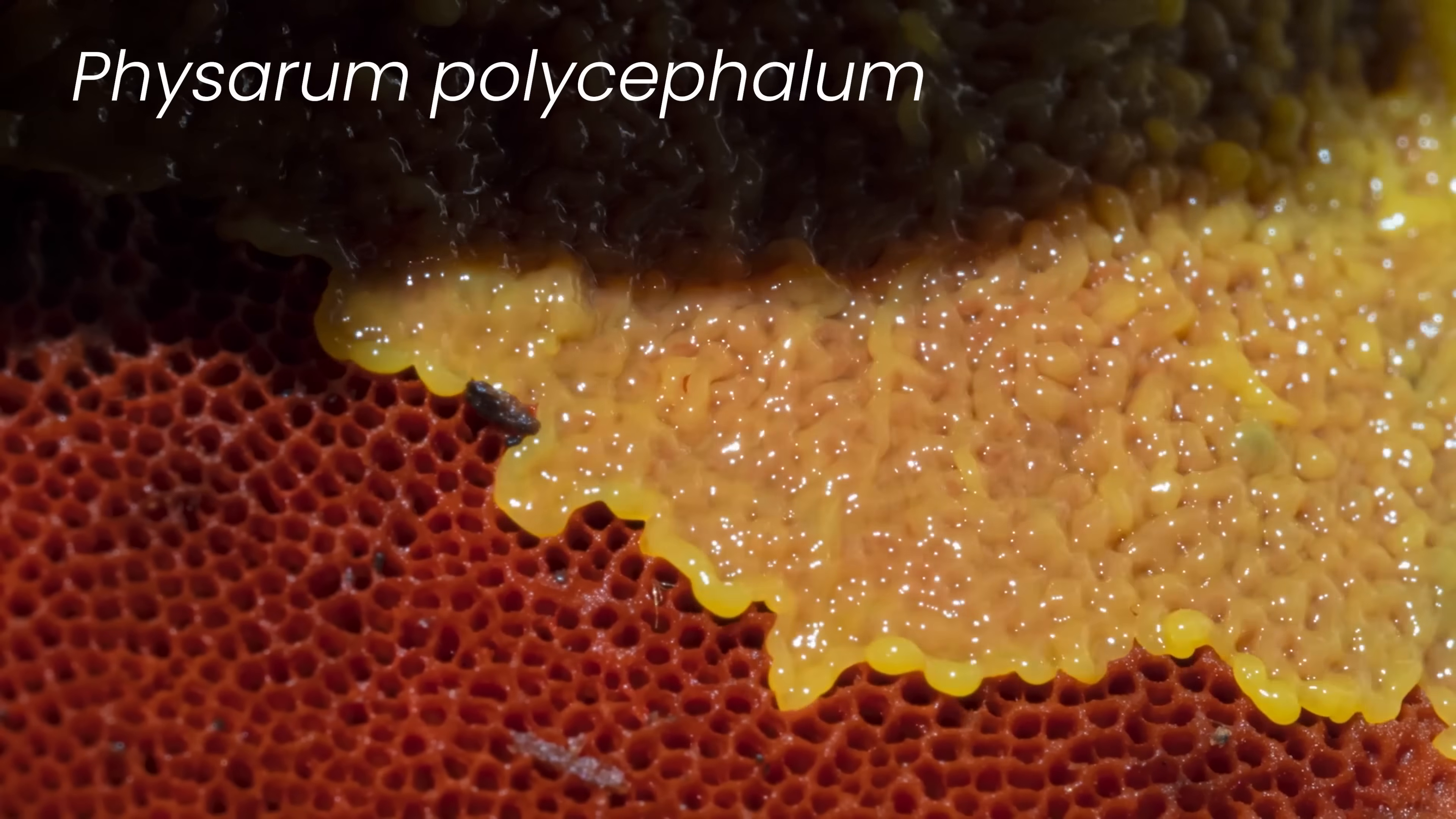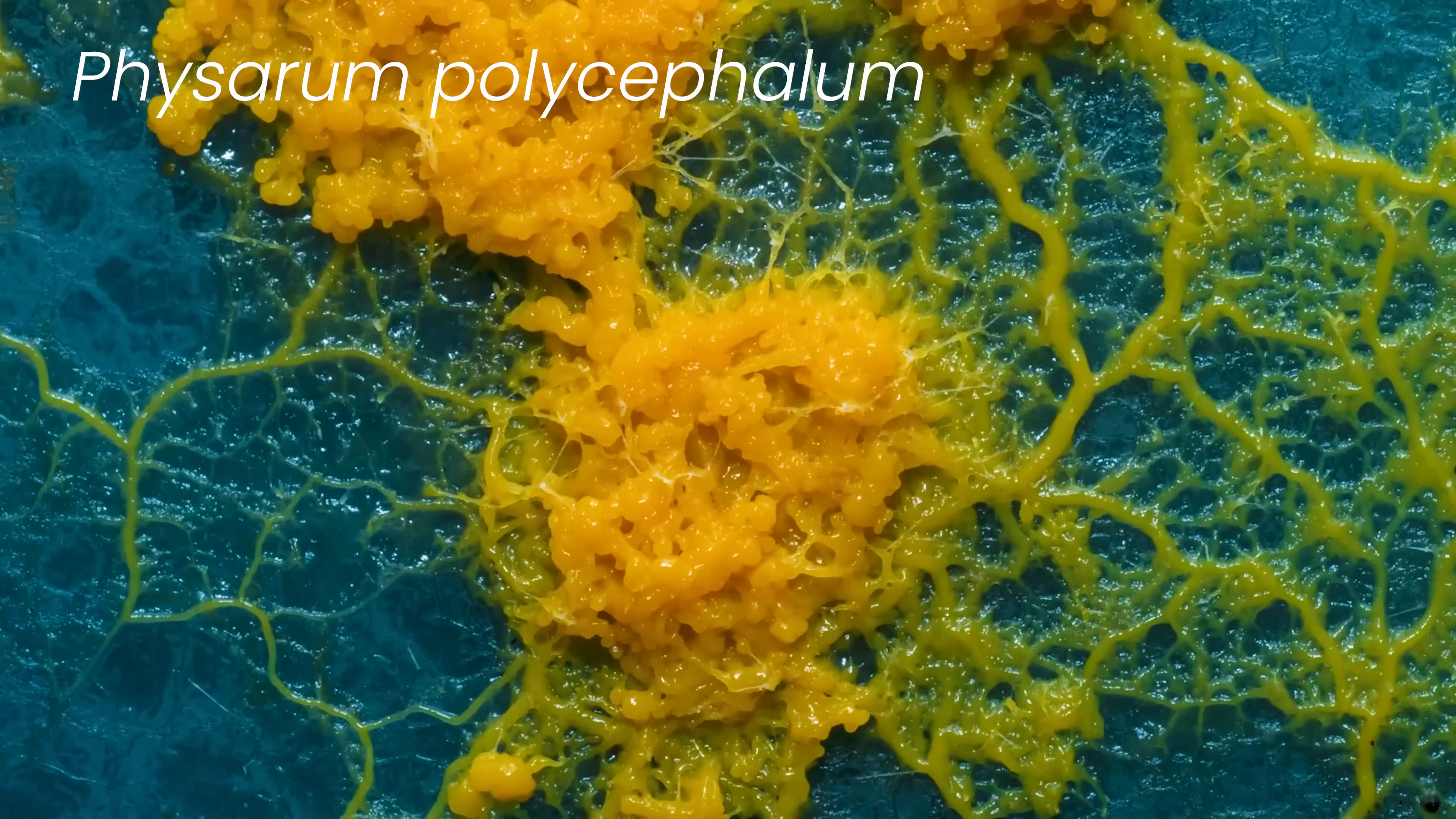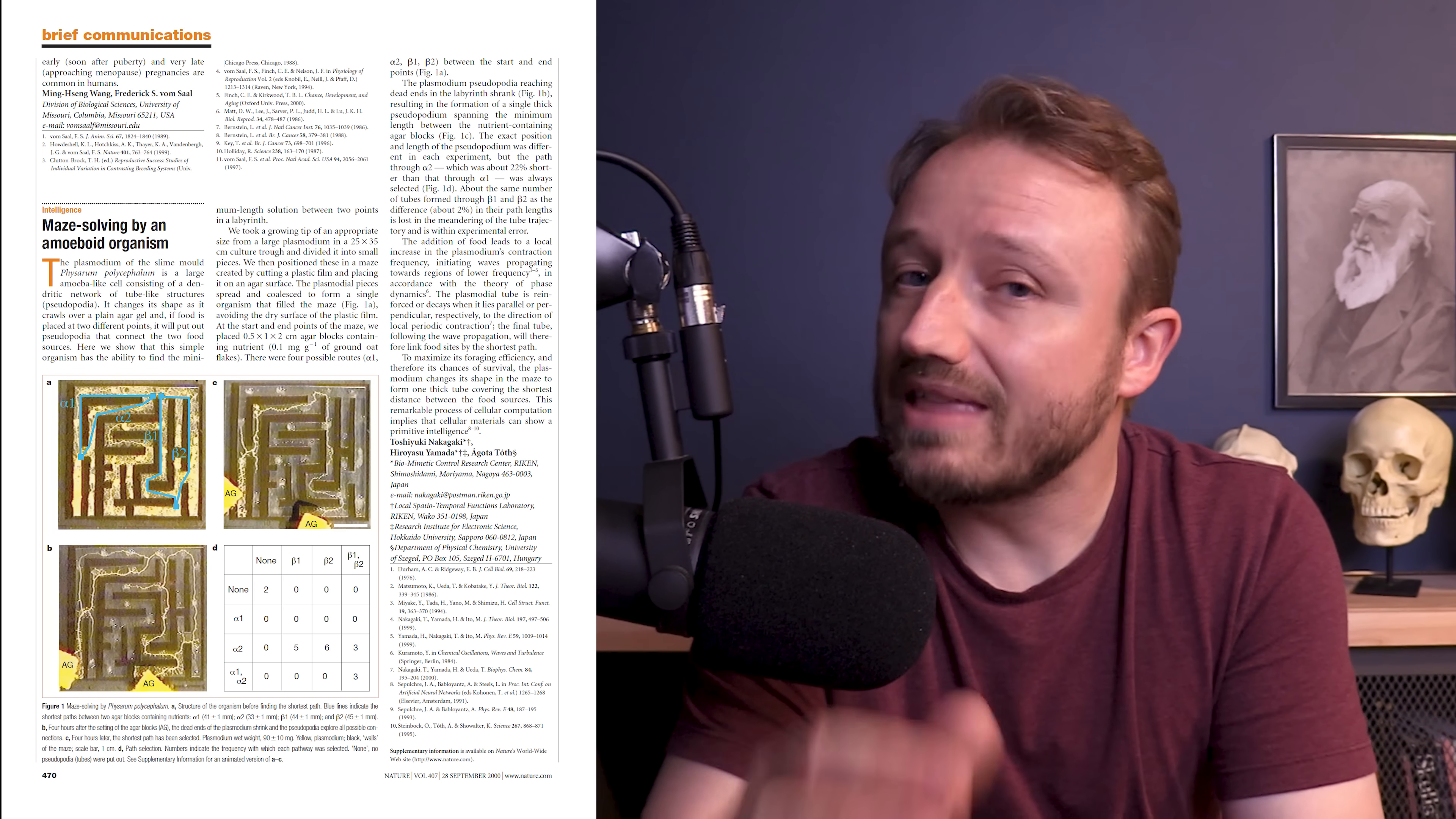25 years ago, scientists in Japan published a paper in Nature. They claimed that this amoeboid possesses a primitive type of intelligence. They claim that this slime mold is intelligent because it solved a maze, a maze that they designed as an intelligence test.